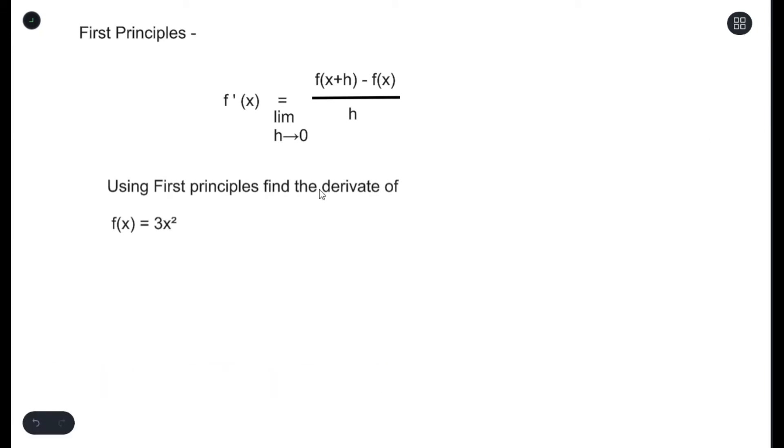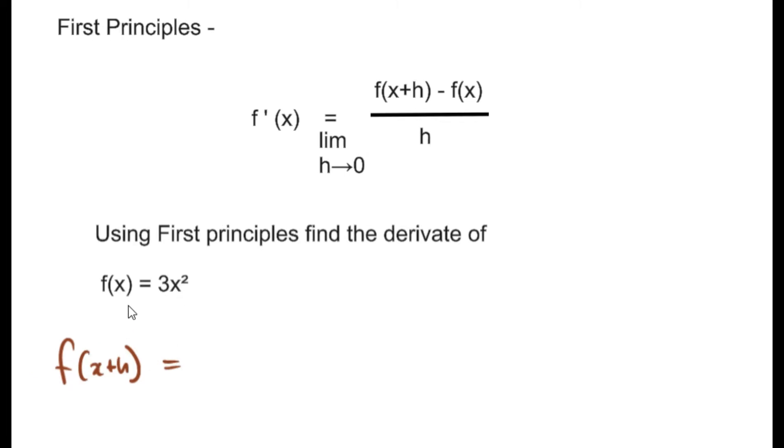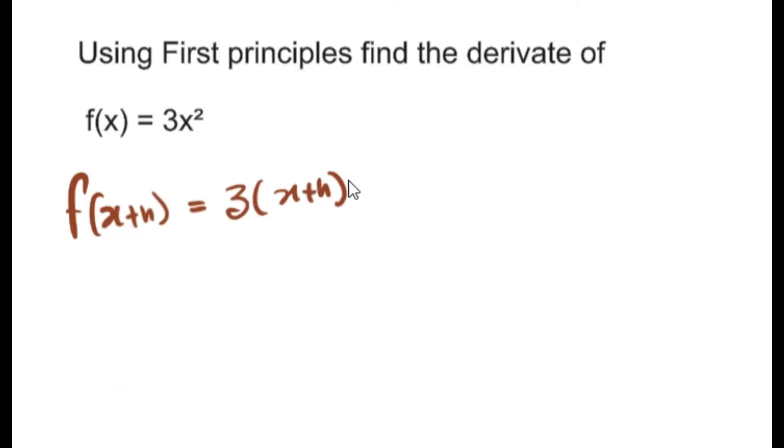The first thing we do is find the value for f of x plus h. So let's say our step one is finding f of x plus h. Now if f of x is equal to 3x squared, we would replace x with x plus h and that will give us...